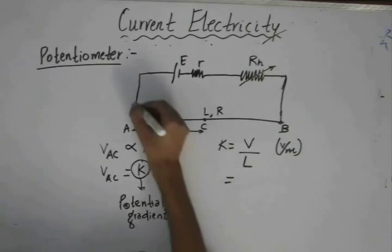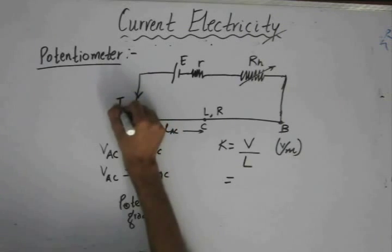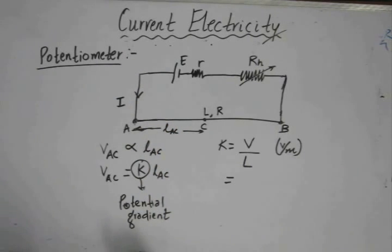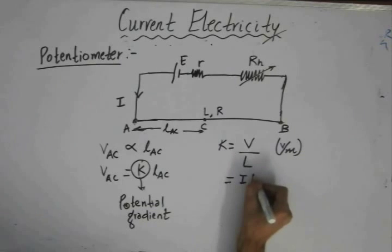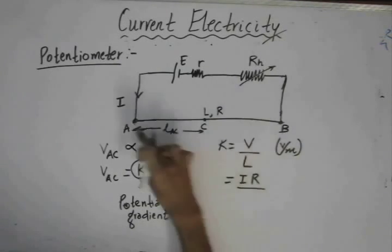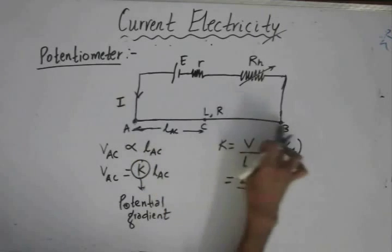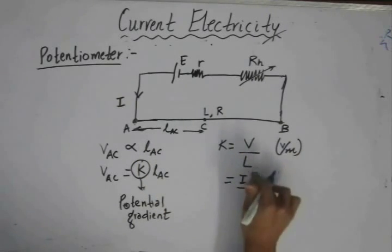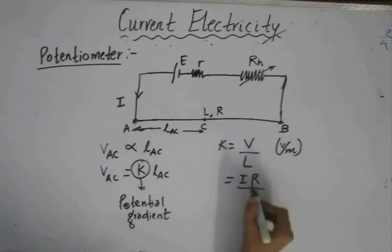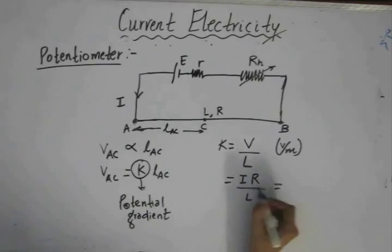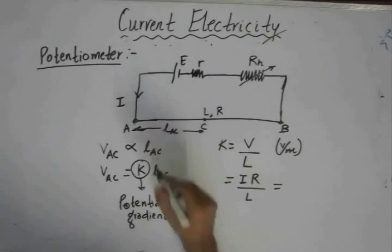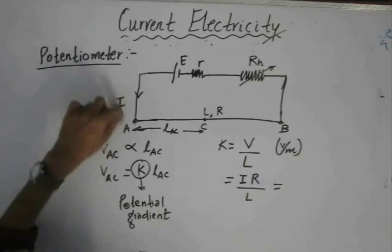Let us assume that the current passing through this circuit is i. So V can be written as i times R. V is the voltage between points A and B, and the corresponding resistance between A and B is R. So we have substituted V using Ohm's law as V = iR.